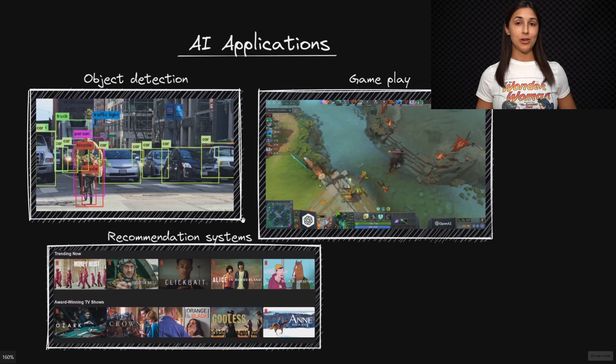One use case is object detection, like that used in self-driving cars, where the AI system within the car is able to identify the different objects within its field of view.